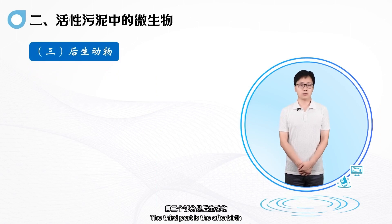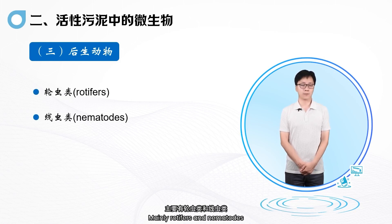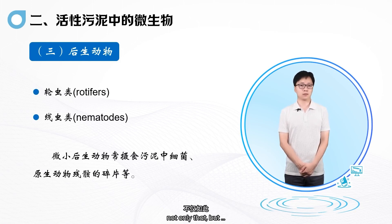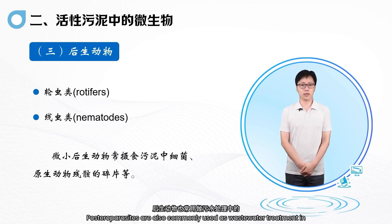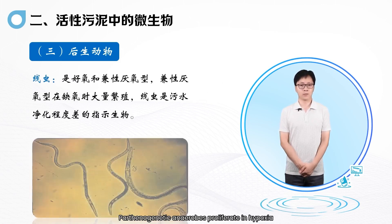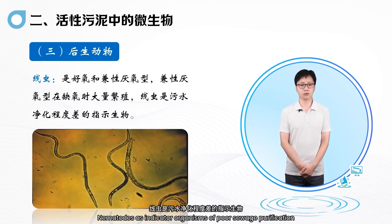The third part is the posterior animals (metazoa), which are more advanced than protozoa. They mainly include rotifers and nematodes. Microfauna often feed on bacteria in sludge and protozoan remains. Posterior animals are also commonly used as indicator organisms in wastewater treatment. For example, nematodes are aerobic and partially anaerobic; parthenogenetic anaerobes proliferate in hypoxia, making nematodes indicator organisms of poor sewage purification.